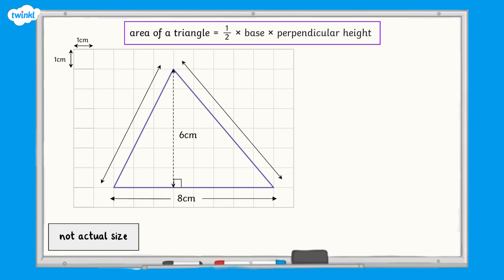Now we have a perpendicular height. The area of this triangle is half multiplied by 8 multiplied by 6, which equals 24 cm squared.